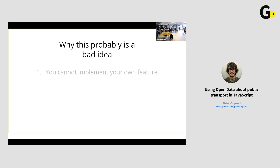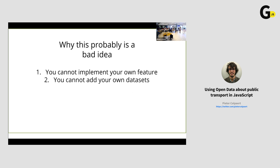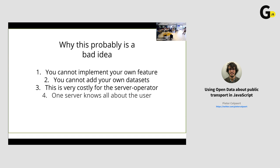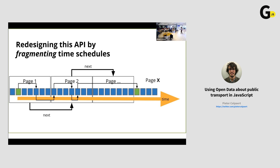Here's why I think this is a bad idea: you cannot implement your own features, you cannot add your own datasets either — like flights. It's also very costly if Google Maps decides to use this dataset, their service might get overloaded quickly. And a fourth reason: one server would then have to know everything about all the people, because the entire request gets always sent to that server — so the request itself contains user-sensitive data.